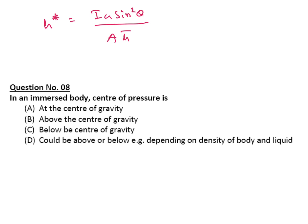H bar is distance of center of gravity. This quantity is positive quantity, so h star is greater than h bar. Center of pressure is below the center of gravity. C is your correct answer.